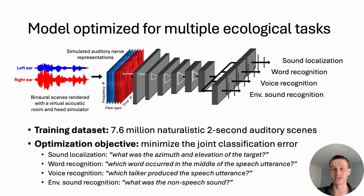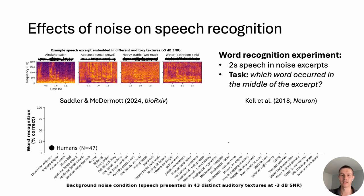So we can train a model to do all this — no problem. Then we want to know: does the trained model look like a human? To compare them, we run human participants and our model on the same behavioral experiment. We measured effects of noise on speech recognition using our middle word recognition task. We played participants two-second speech excerpts in many different noise conditions, and the task is to report which word of 800 options occurred in the middle of the excerpt.